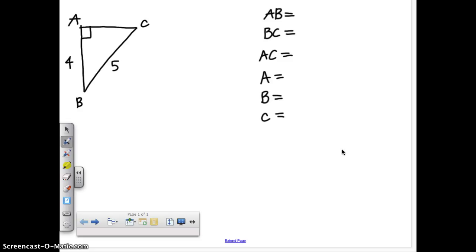There are three of those six things that we can list right away. We know angle A is 90 degrees. That's in the picture. Also in the picture, length of AB is 4. Length of BC is 5.